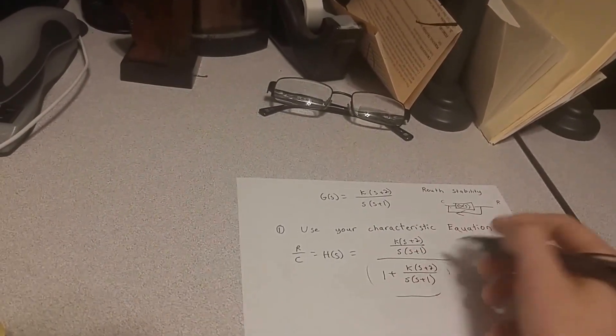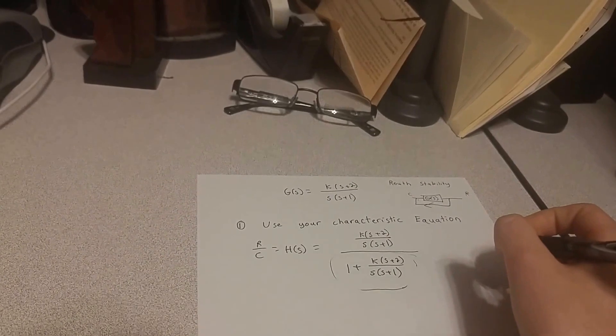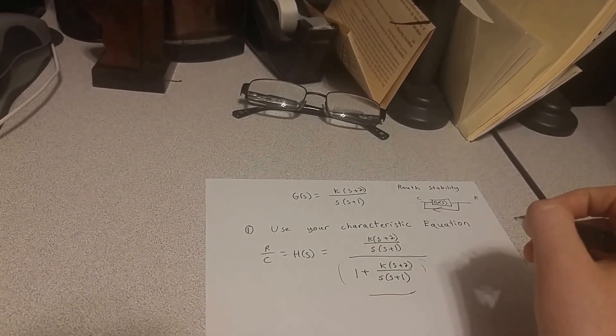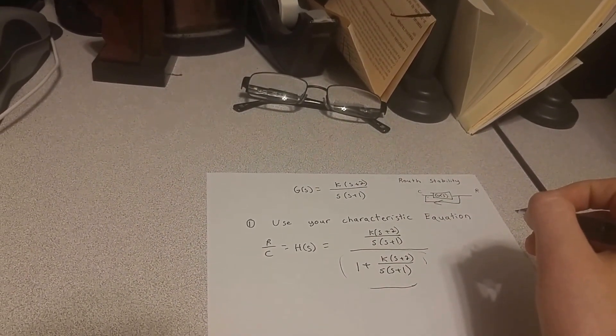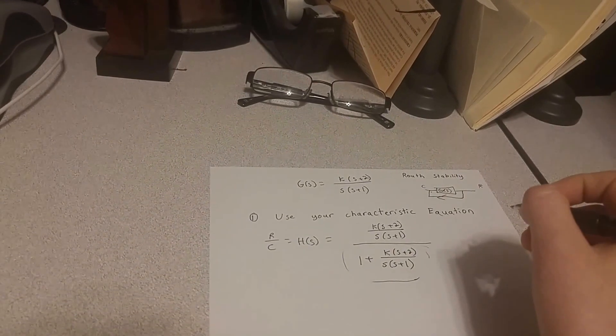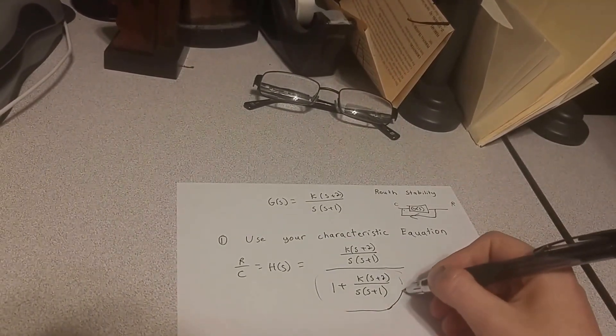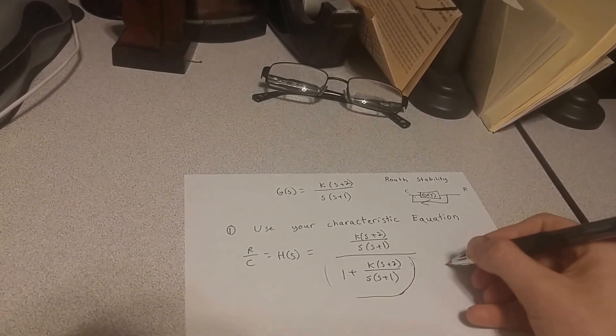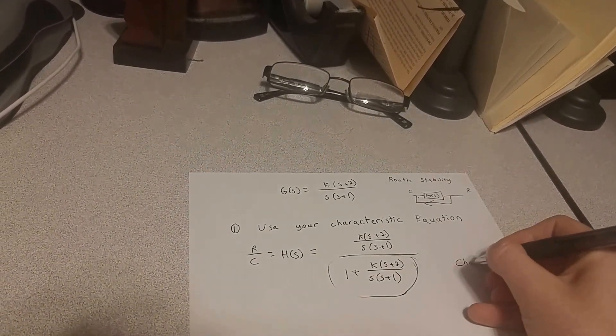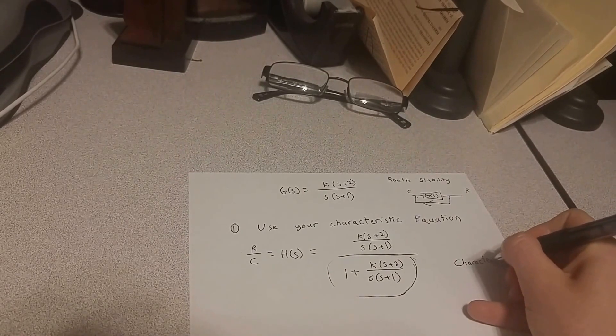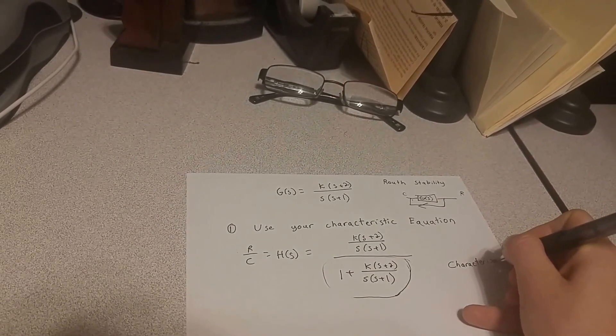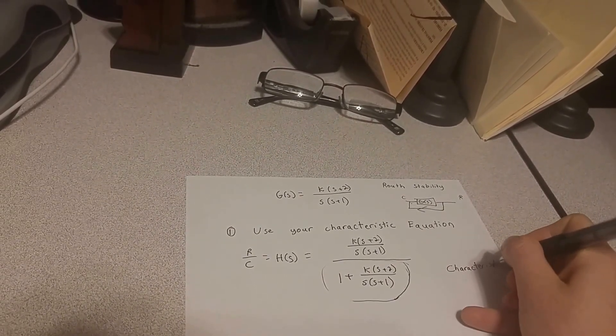So our characteristic equation is going to be this right here because we are only concerned with the poles of the function. We want to make sure that there are no right half plane poles. In order to do that, if there are no right half plane poles, then that would mean we have a stable system. This is why this is our characteristic equation.